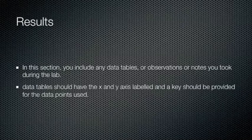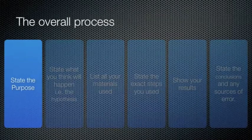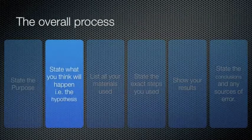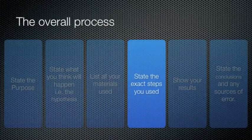Okay, so in summary, what we want to do is make sure that we begin the process of the scientific method by stating the purpose. You then want to make sure that you state what you think is going to happen, in other words, the hypothesis. You list your materials. You state exactly what steps you used to conduct the experiment. You show the results. And then you state the conclusions and any other sources of error that occurred in the experiment. So overall, that's the process with the scientific method. Go ahead and use this every time we do a lab. And hopefully that will be very helpful for you.